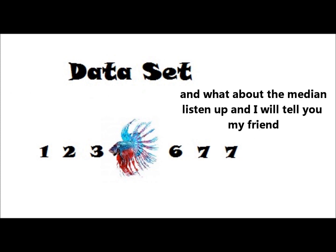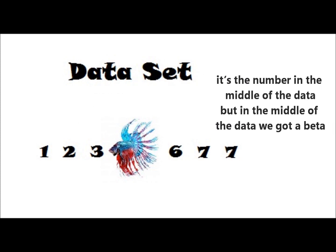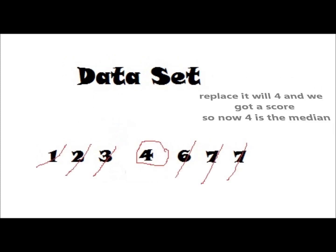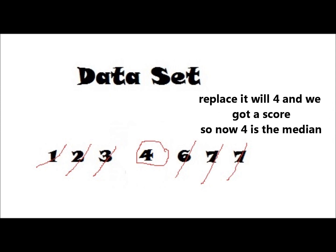And what about the median, listen up, and I will tell you my friend. It's the number in the middle of the data, but in the middle of the data we got a beta. Replace it by 4, and we got a score, so now 4 is the median.